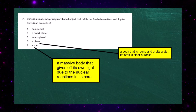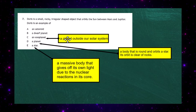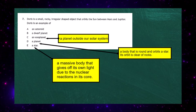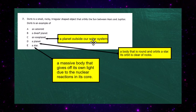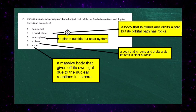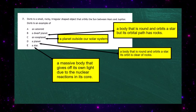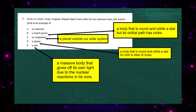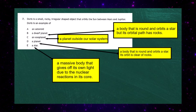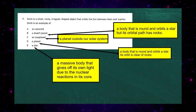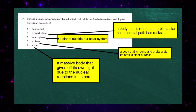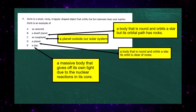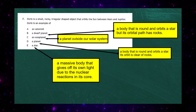An exoplanet is a planet which exists outside our own solar system, so it can't be Doris. A dwarf planet is round, spherical, and orbits a star just like a planet, but the difference is that in its orbital path there are rocks — it hasn't got enough mass to clear them. So the orbital path of a dwarf planet is full of debris.